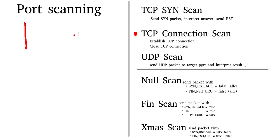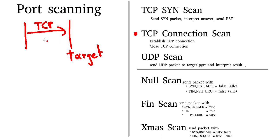The TCP connection scan is even simpler — we just establish a regular TCP connection to our target, and after the connection is established, we close it. The difference between TCP SYN scan and TCP connection scan is that with TCP SYN scan you send a raw packet over the wire, whereas with TCP connection scan you use the TCP connection functionality provided by the operating system. So if you don't have privileges to send raw packets, you can use the TCP connection scan as a regular user.